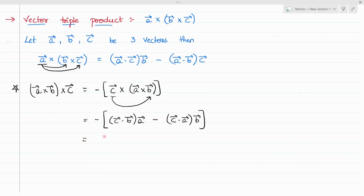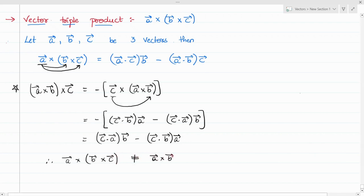Now you will get it as C dot B. Multiply the negative sign inside the bracket, that is C dot B into A. So if you observe this value, that is A cross B cross C, and this value A cross B cross C, both the values are different. Therefore A cross B cross C is not equal to A cross B cross C. This is a very important note to remember.